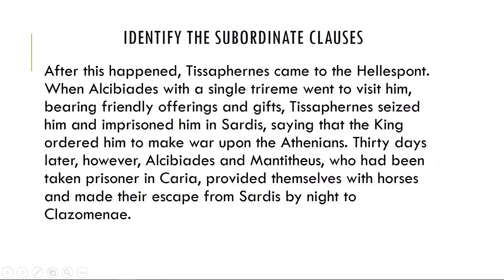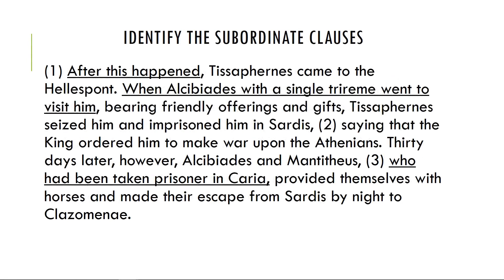Finally, let's identify all the subordinate clauses. 'After this happened' is a temporal clause; 'when Alcibiades went' is again a temporal clause; 'who had been taken prisoner' is a relative clause — it's explaining who this person is, Menithius.